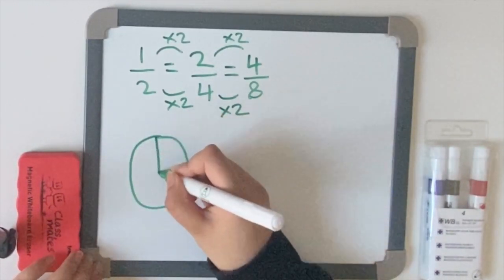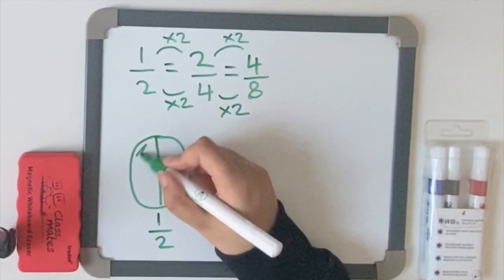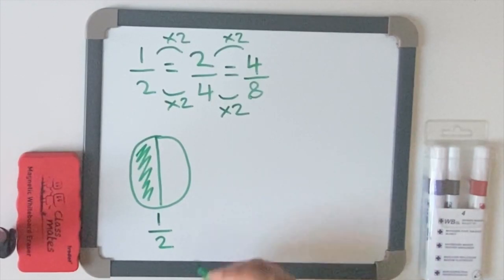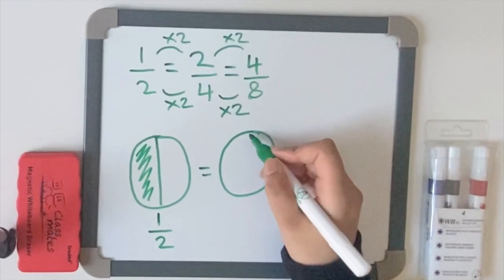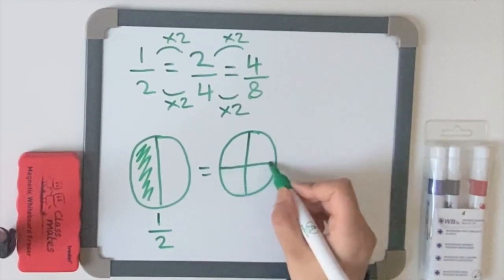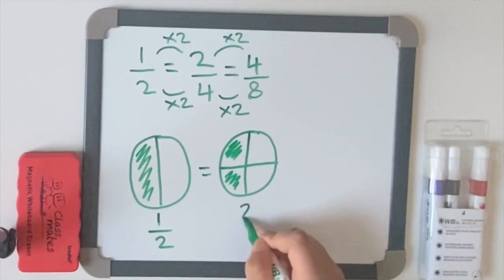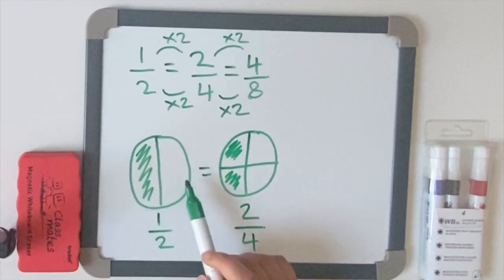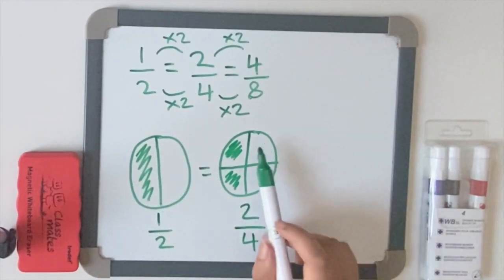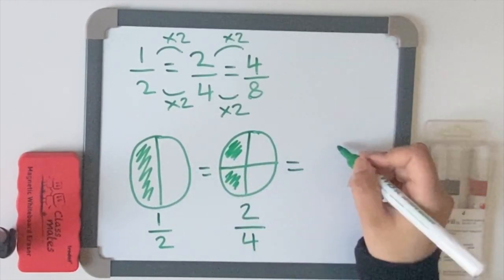Now let's visually look at it. This is going to be a half a pizza. Let's shade this in. That is the same as saying two quarters. Let's split this into four. So can you see they are both the same but they are just represented differently. I can have half the pizza but that would be the same as having two fourths of a pizza.